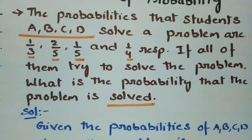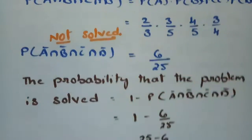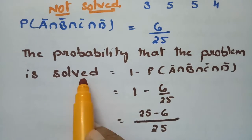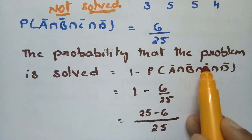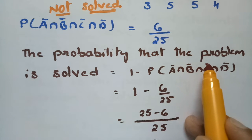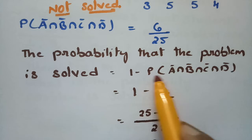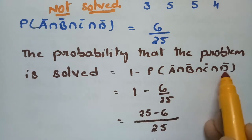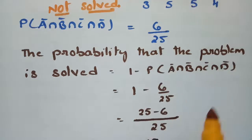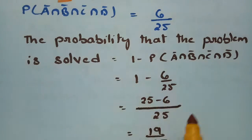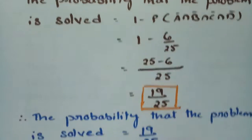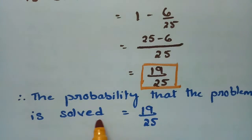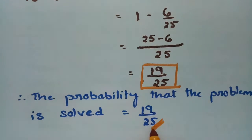Now, what is asked is the probability that the problem is solved. That equals 1 minus the probability that the problem is not solved by all four of them together: 1 − P(A̅ ∩ B̅ ∩ C̅ ∩ D̅) = 1 − 6/25 = 19/25. Therefore, the probability that the problem is solved is 19/25.